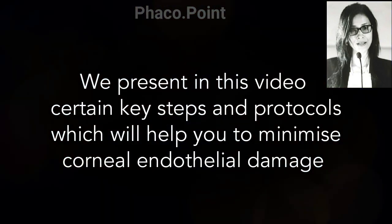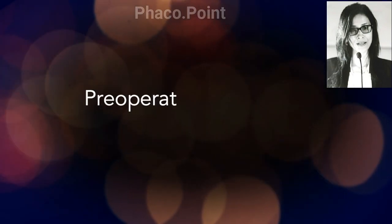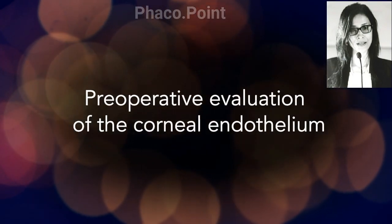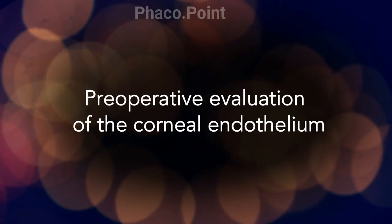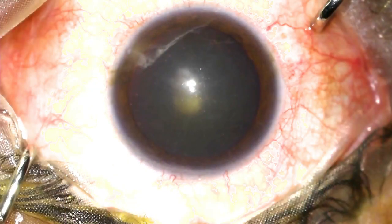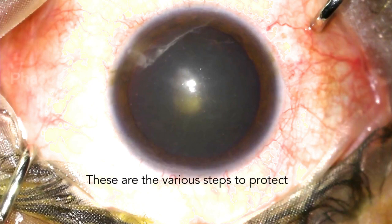The corneal endothelium needs to be evaluated in the preoperative period. Clinically, we need to look for signs of corneal gutting or the presence of an early corneal decompensation, which can occur in a patient with Fuchs endothelial dystrophy.